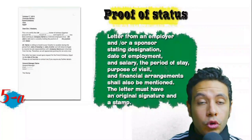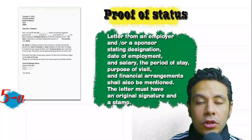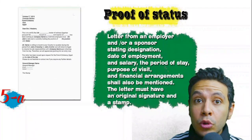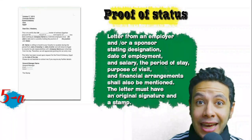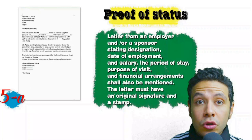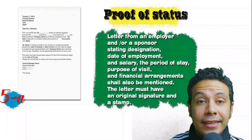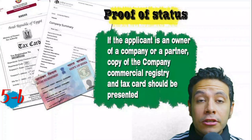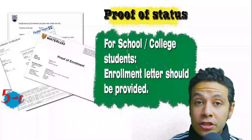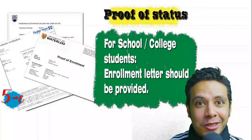In most visa application processes you will need to provide proof of status. If you are an employee, provide a letter from your employer or HR department mentioning your name, work details, and salary, with both address and contact numbers. All letters must have an original signature and stamp. If you own a business, your commercial registry and tax card must be presented. If you are a student, an enrollment letter from your university or school should be provided.